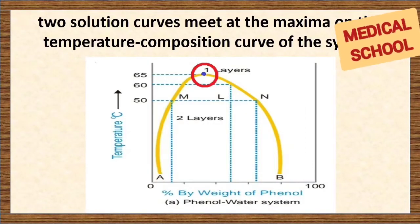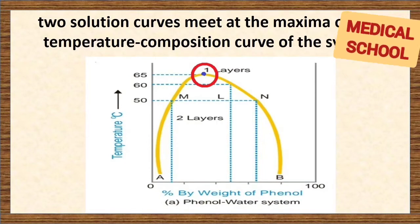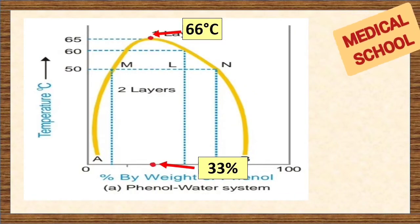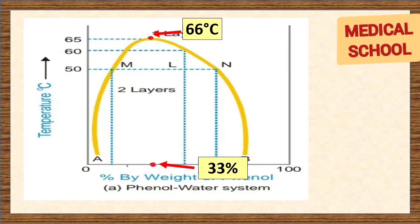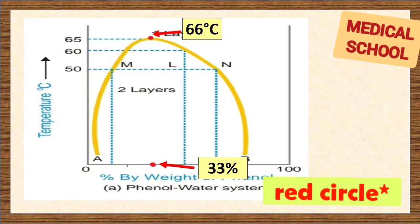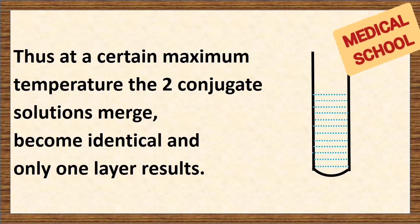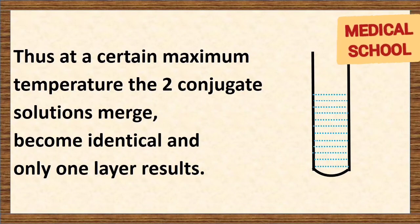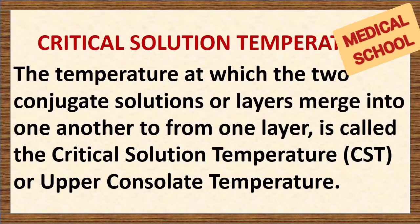Now, these two solution curves meet at the maxima on the temperature-composition curve of the system. This point corresponds to a temperature of 66°C and a composition of phenol of 33%. In this picture, the blue circle is your critical solution temperature. Thus, at a certain maximum temperature, the two conjugate solutions merge, become identical, and only one layer forms. This temperature is known as the critical solution temperature.